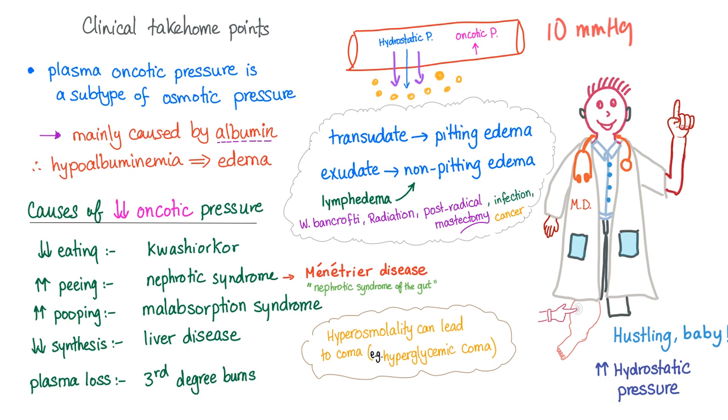What are the causes of decreased oncotic pressure? They are the causes of hypoalbuminemia. What if you are not eating protein such as kwashiorkor disease? Are you going to get edema? Of course. How about you peeing the protein out such as nephrotic syndrome? Or don't forget miniature disease which is nephrotic syndrome with your gut. I've talked about it in a separate video. Make sure to check it out. If you are increasingly pooping protein out such as malabsorption syndrome. Decreased synthesis of albumin such as in liver disease, let's say cirrhosis. Plasma loss in third degree burns, you're losing plasma with the plasma proteins, mainly albumin, you end up with edema.